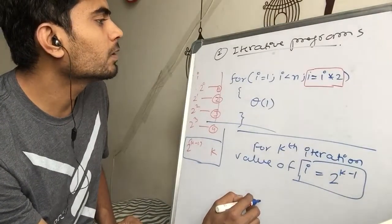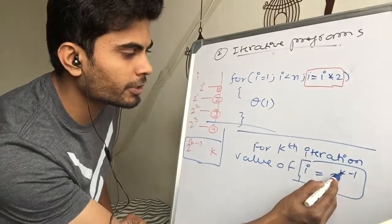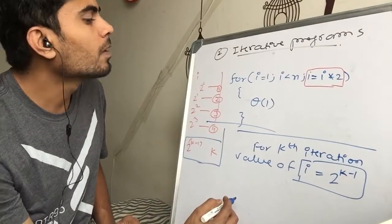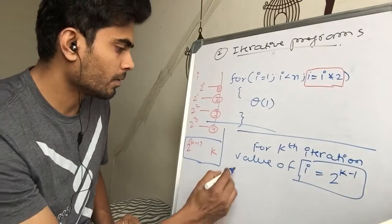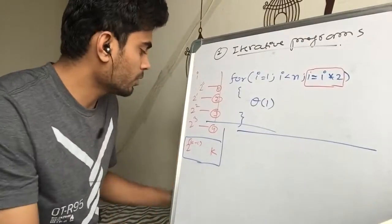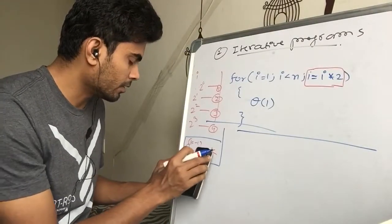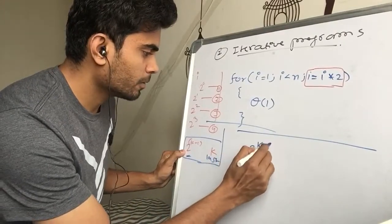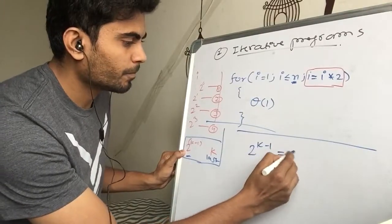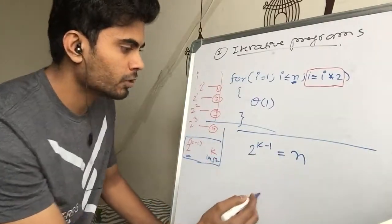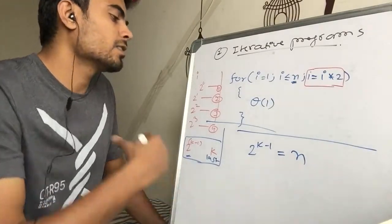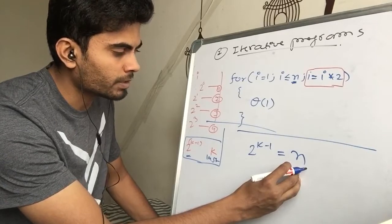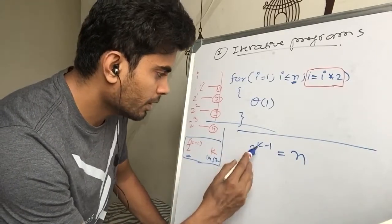Since i equals 2^(k-1), and k represents the iteration number, we ask: till what value does k go? Suppose the loop ends at some last round. In that last round, the value of i should be less than or equal to n. So after the kth round, the value achieved should be less than or equal to n.